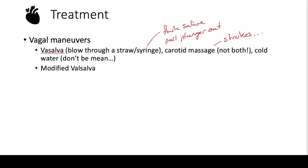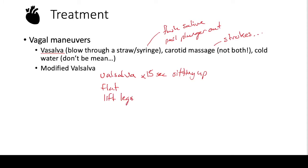There's also something called the modified valsalva, which is on UpToDate and is actually interesting. You have the patient do a valsalva maneuver — by bearing down or blowing through a straw — for 15 seconds while sitting up. Then when they stop, you lay them flat and lift up their legs for another 15 seconds. The blood rushes back into the carotid, distending the carotid arch and creating a stronger vagal response. Supposedly it works 60 to 80 percent of the time. It's something to know about for patients that are stable and can be moved around easily.